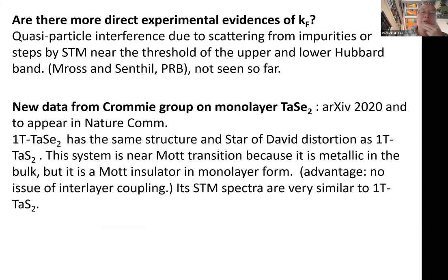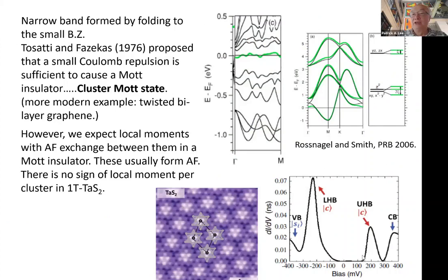For other experimental evidence, Ross and Senthil proposed quasi-particle interference: if spinons scatter from impurities they should form an interference pattern, similar to what happens on an electron Fermi surface, observable near the threshold of the upper and lower Hubbard band. This has been searched for but so far has not been found.